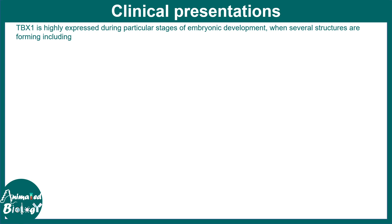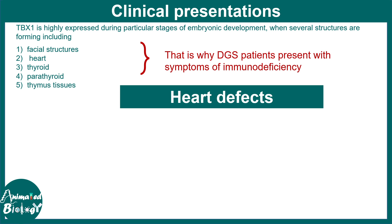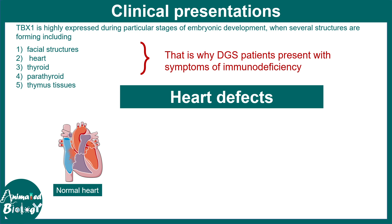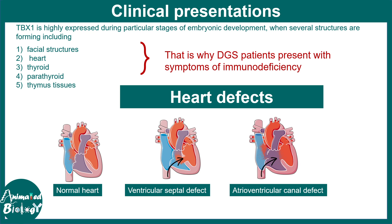TBX1 is highly expressed during different developmental stages, including facial feature formation, heart development, thyroid and parathyroid development, and even thymus formation. This explains why DiGeorge syndrome patients present with symptoms of immunodeficiency, because the thymus is abrogated or malformed. There are also several heart defects such as ventricular septal defect and atrioventricular canal defect.